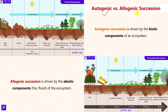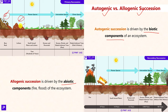Moving to the next concept: autogenic succession and allogenic succession. Autogenic succession is driven by biotic components in the ecosystem, while allogenic succession is driven by abiotic components like fire or flood. For example, in primary succession beginning on bare landmass, abiotic components — moisture and the landmass itself — lead to the succession, making it allogenic. Similarly, in secondary succession where a community ends due to fire, that is again allogenic succession. At various stages, both biotic and abiotic factors play important roles in the succession process.